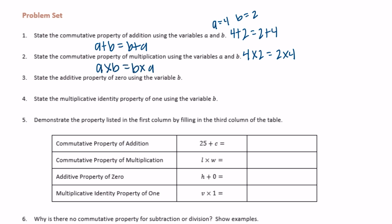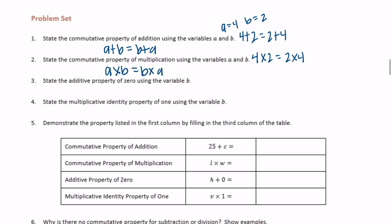State the additive property of zero using the variable b. The additive property of zero is like, let's use b is two again, so two plus zero equals two. If we replace the twos with b, we could say b plus zero equals b.